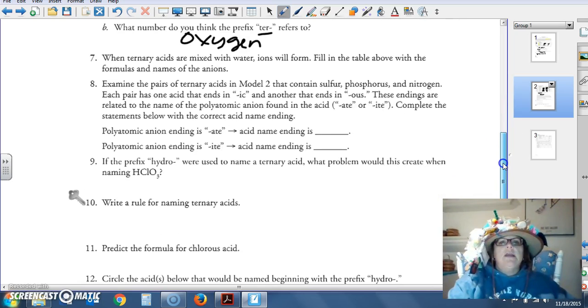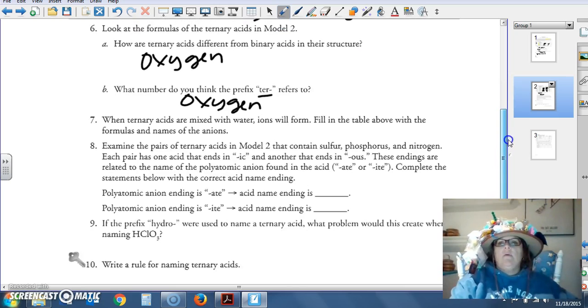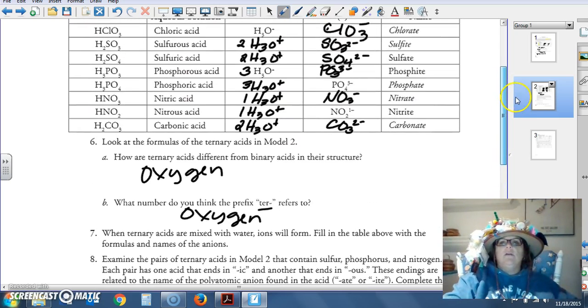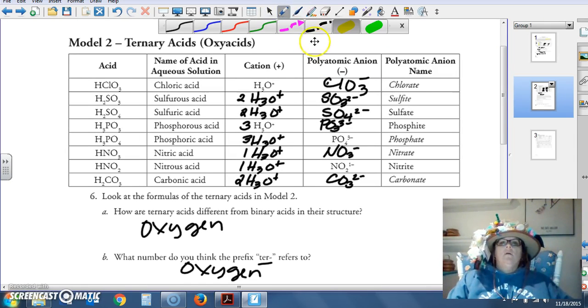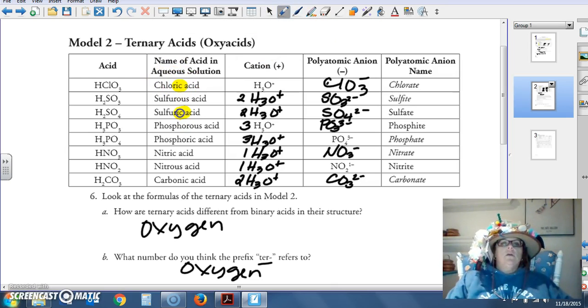Examine each of the pairs of ternary acids in model two that contains sulfur, phosphorus, and nitrogen. Each pair has one acid that ends in ic and another that ends in ous. These endings are related to the name of the polyatomic ion. So let's find all the ics. Chloric, sulfuric, phosphoric, nitric, carbonic. What do they all have in common? Look at their names. Eight. They all end in ate.